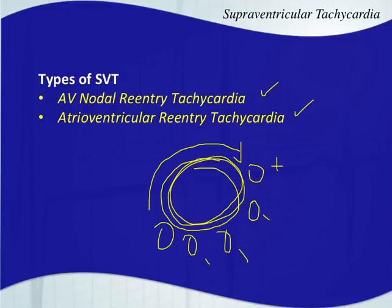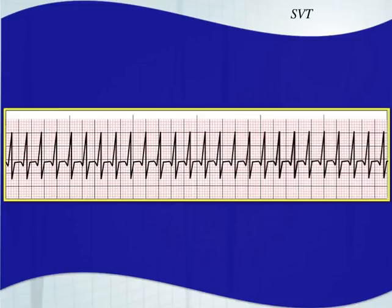Adenosine is almost only used to treat supraventricular tachycardia and it's very effective if given fast enough to the right rhythm. Vagal maneuvers are also very effective. If vagal maneuvers break the arrhythmia and it comes back, that's a good indication to skip giving adenosine — we'll talk about that in a treatment discussion.